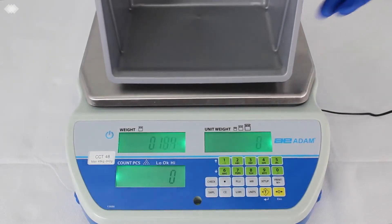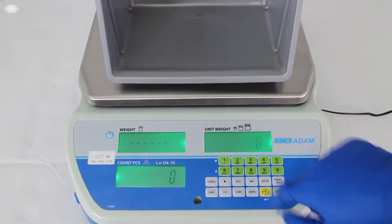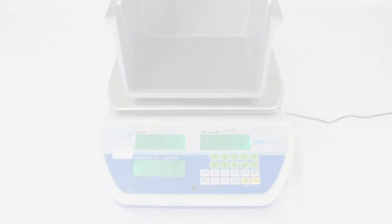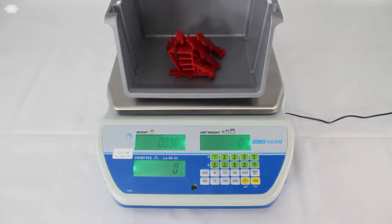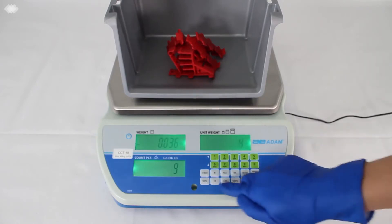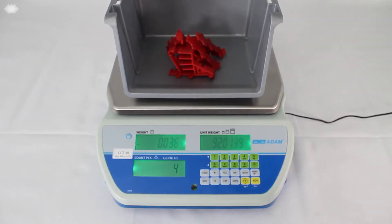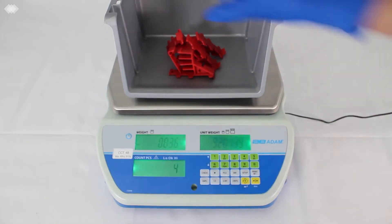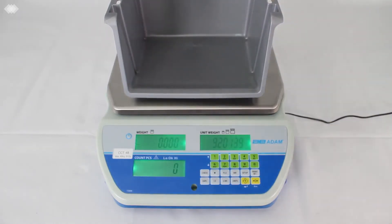Cruiser CCT is ideal for inventory and stock control tasks or check counting during packaging processes. It's easy to verify the number of pieces in a package or in a lot before shipping. Store and recall up to 199 PLUs or piece weights to improve efficiency in production or warehouse applications.